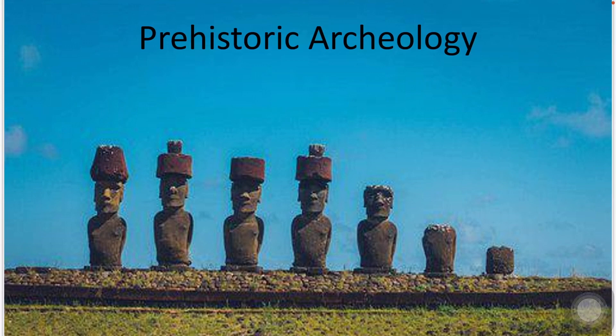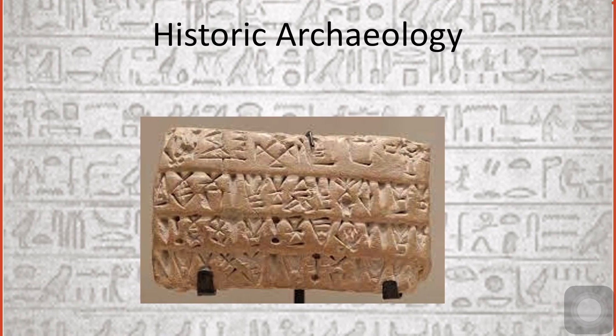Archaeologists studying the Clovis people, for instance, have only arrow heads called projectile points and stone tools as artifacts. These unique projectile points were first discovered in Clovis, New Mexico, and the culture was named after the town. So-called Clovis points established the Clovis people as one of the first inhabitants of North America, dated to about 13,000 years ago.